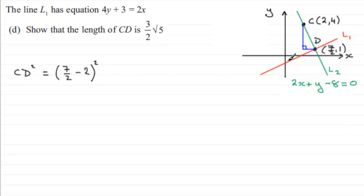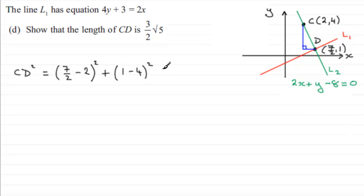So you can always just use the difference in the x-coordinates squared. To that we add the difference in the y-coordinates squared. That would be 4 minus 1, or even 1 minus 4 — it's not going to make any difference. So I'll write 1 minus 4, all squared.